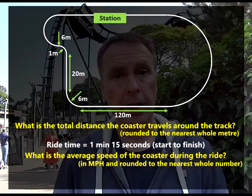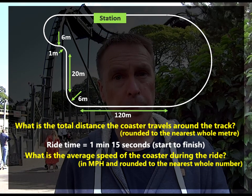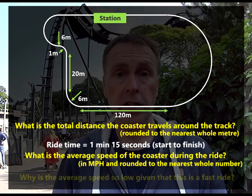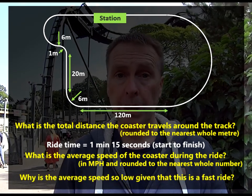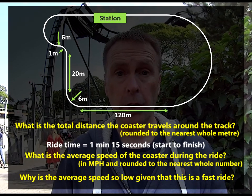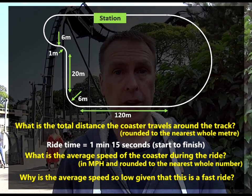And finally, when you find the answer for the average speed, it may be lower than you might expect. So can you tell me why is the average speed so low, given that this is actually a fast ride?